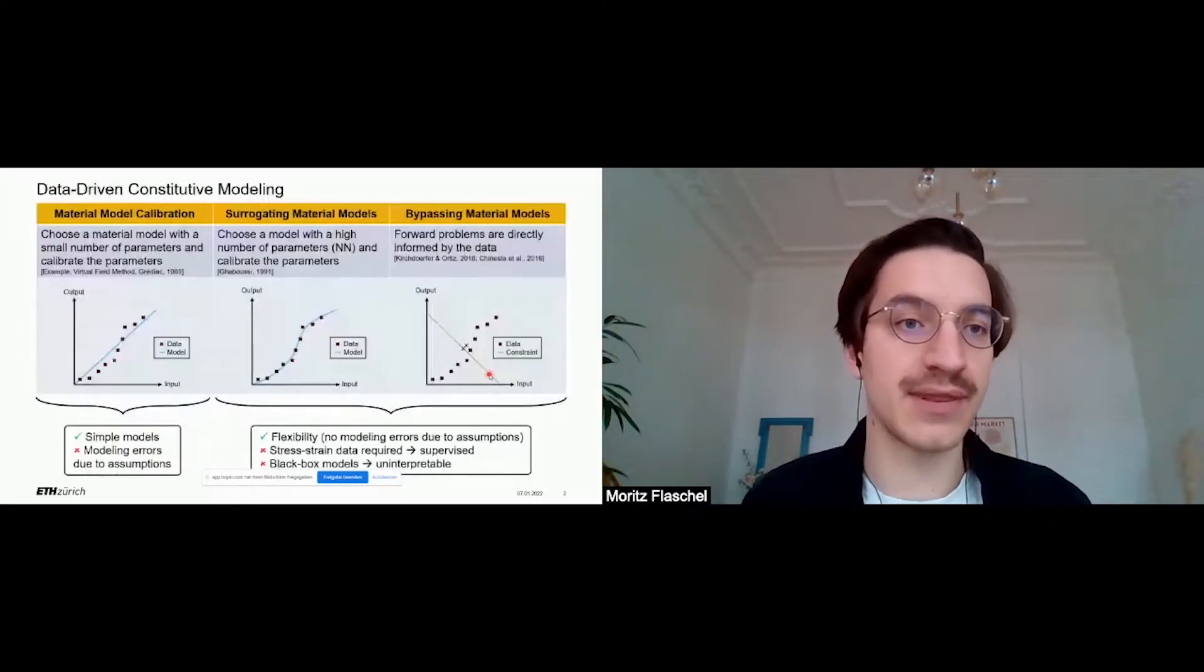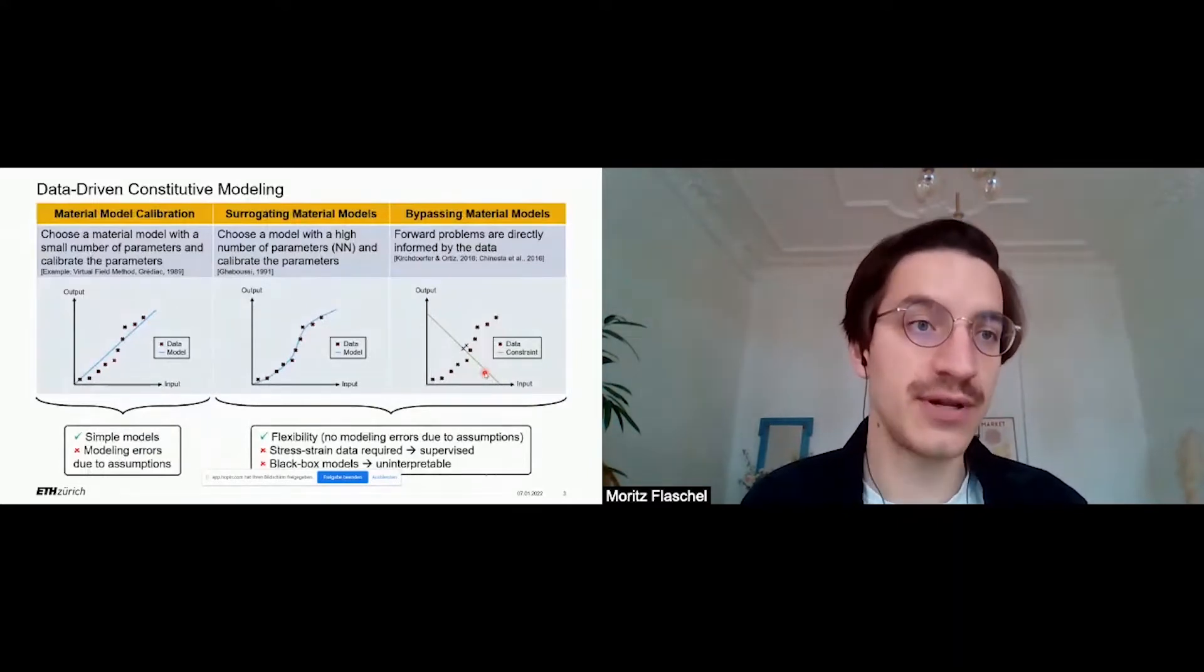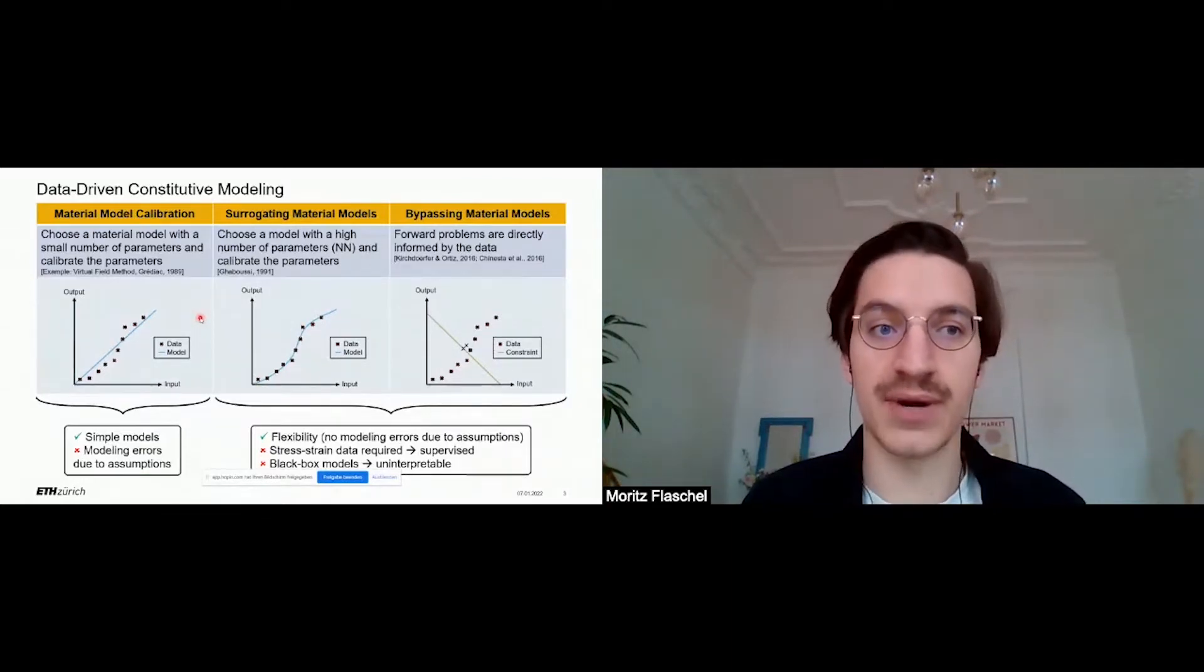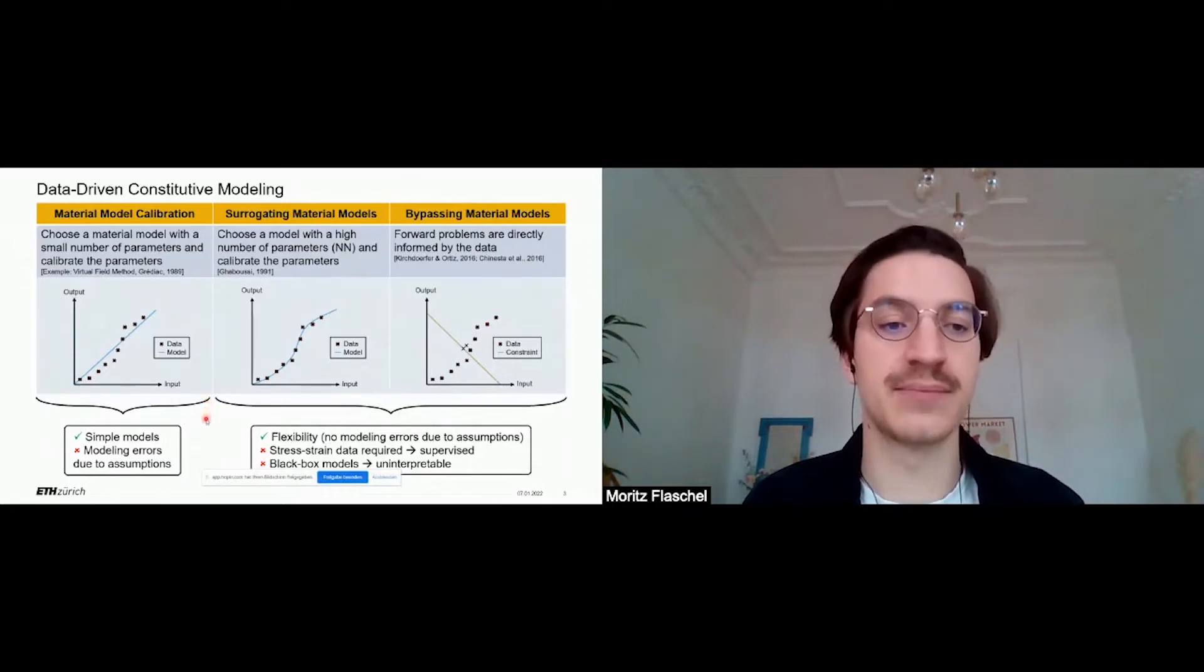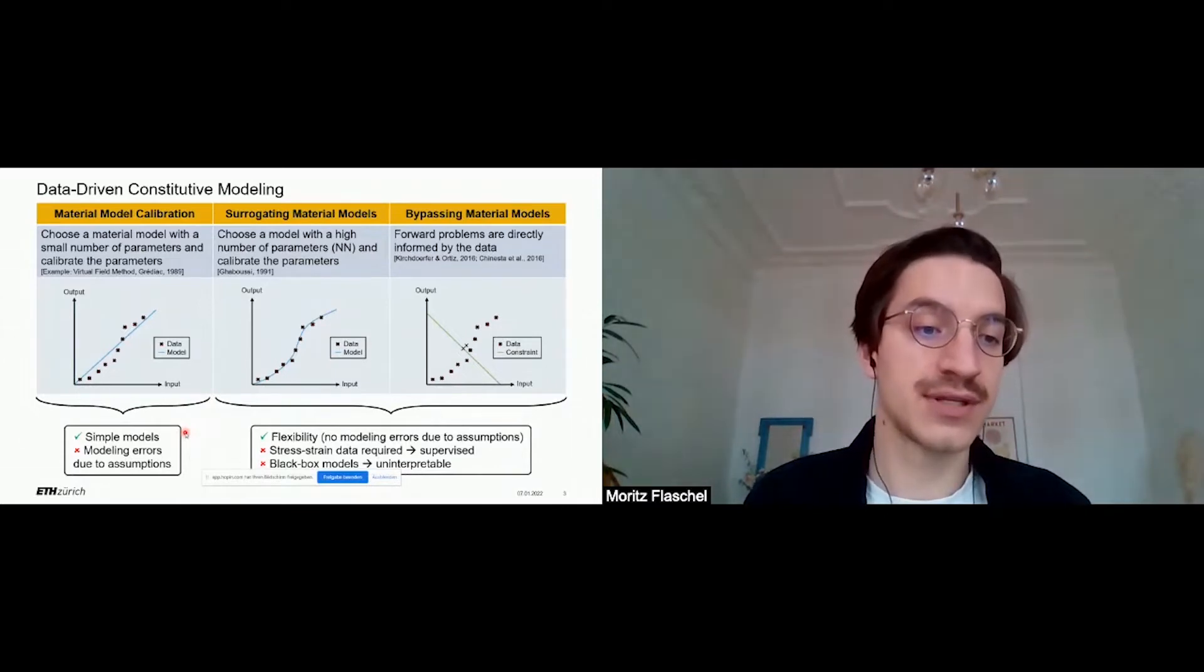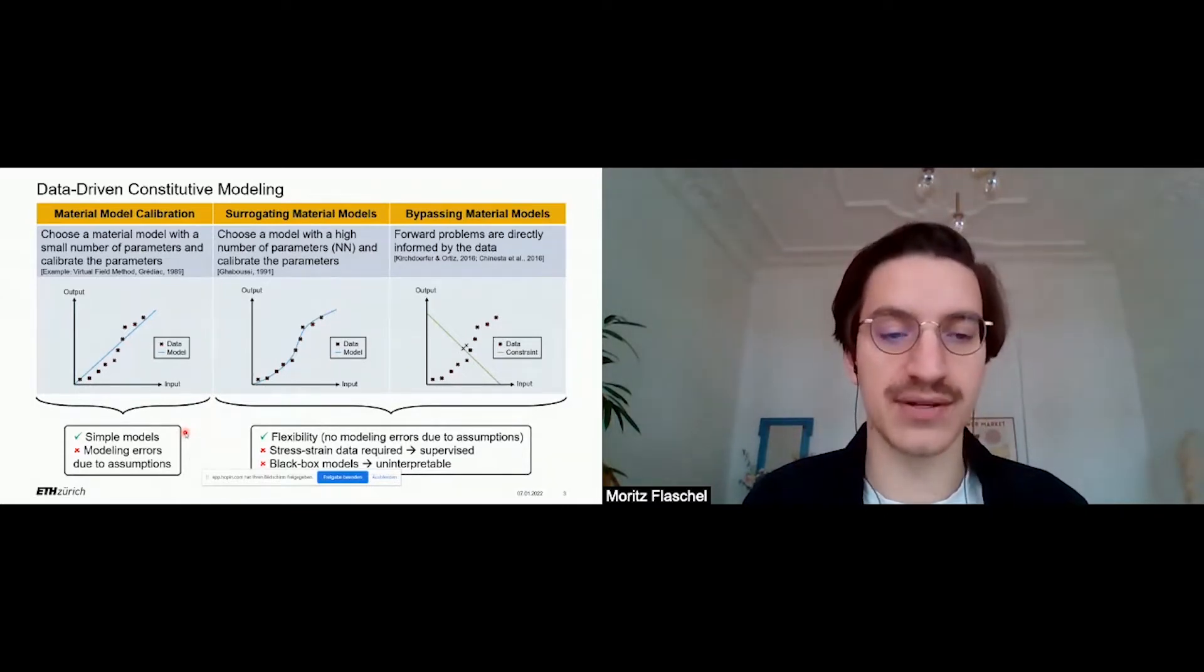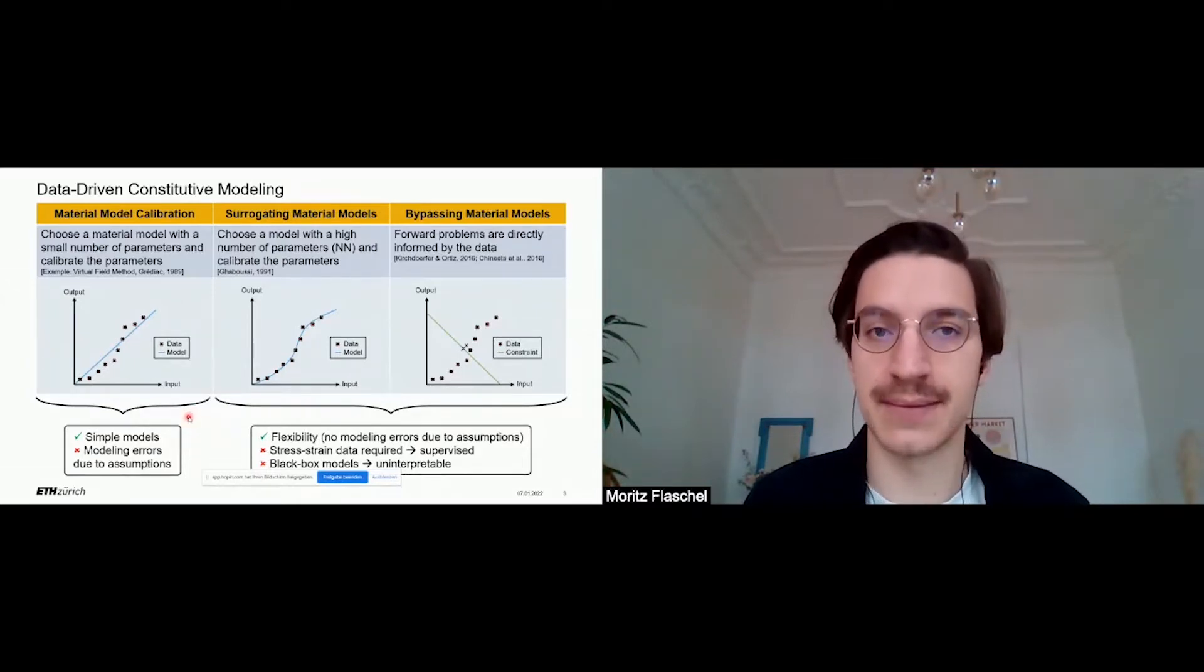Before I talk about our method, I would like to talk about data-driven constitutive modeling in general. The classical approach of constitutive modeling is to choose a material model with a small number of parameters and calibrate those parameters based on some given data. The advantage of this classical approach is that one obtains very simple models. However, due to the assumptions that we make on the material model, we introduce some modeling errors, which leads to a bad fitting accuracy in some cases.